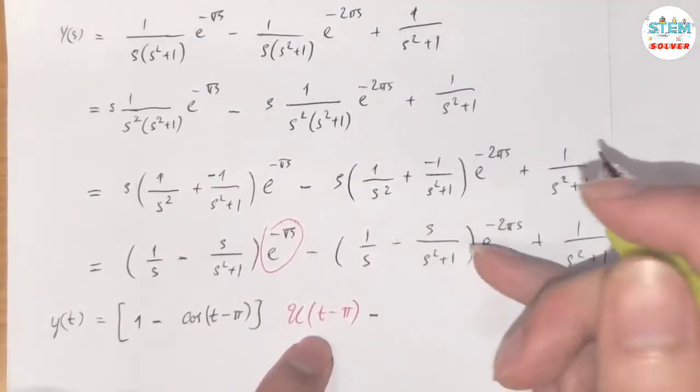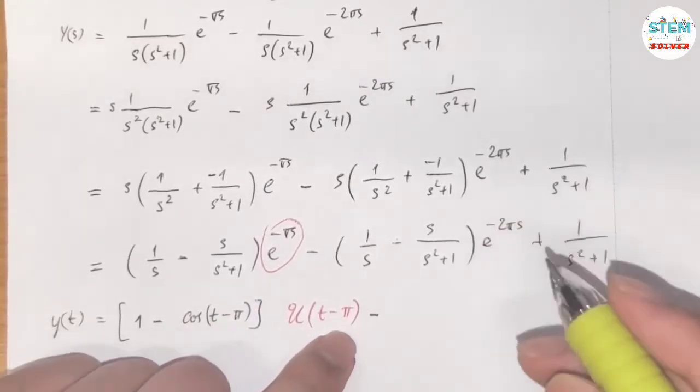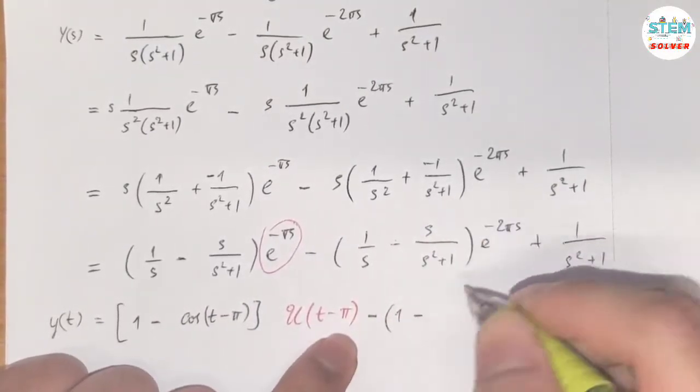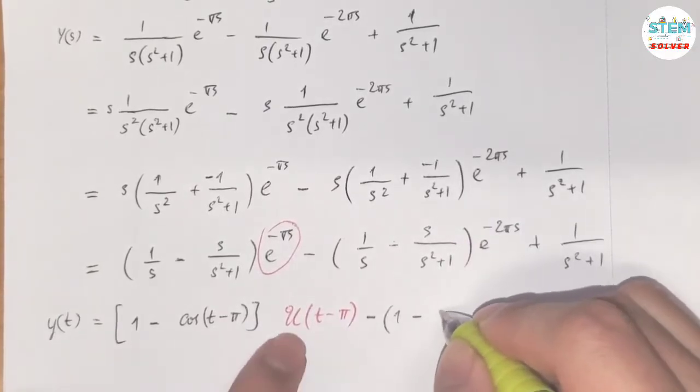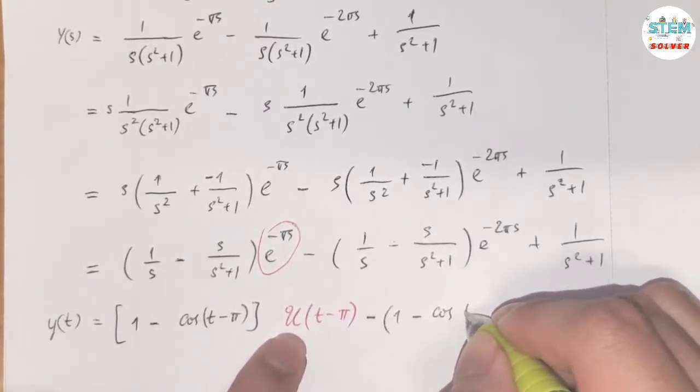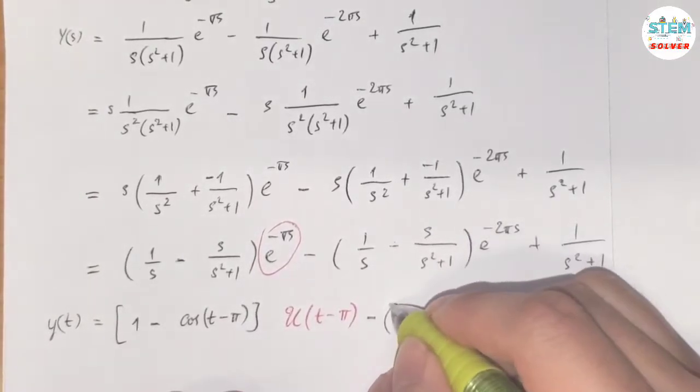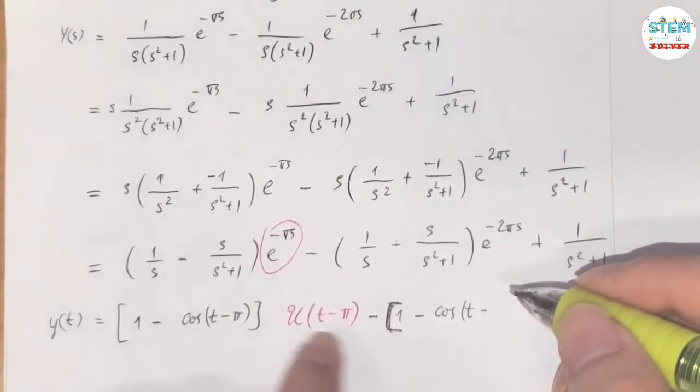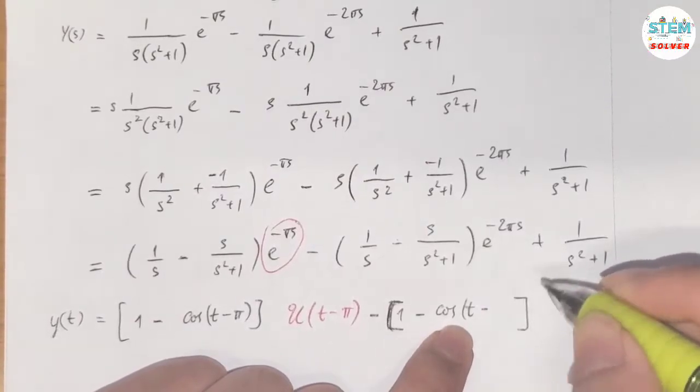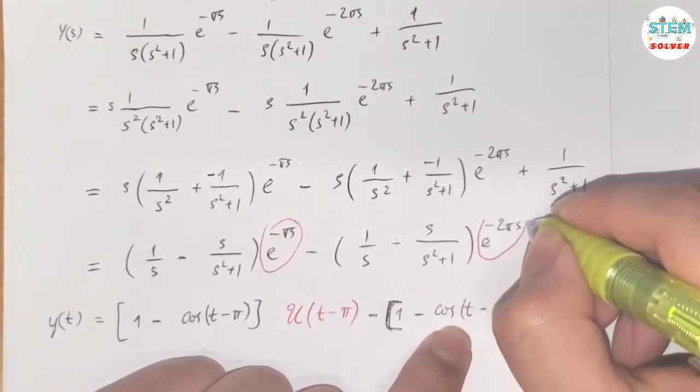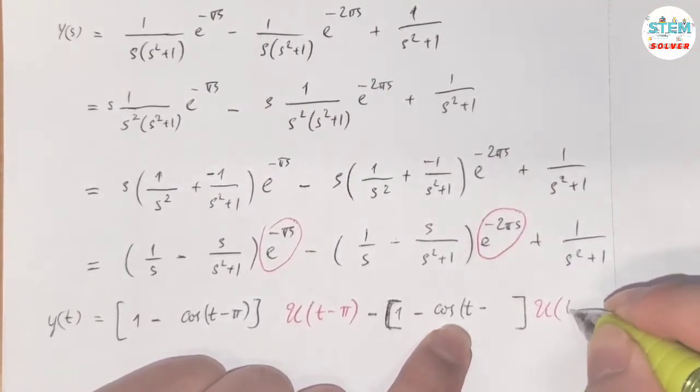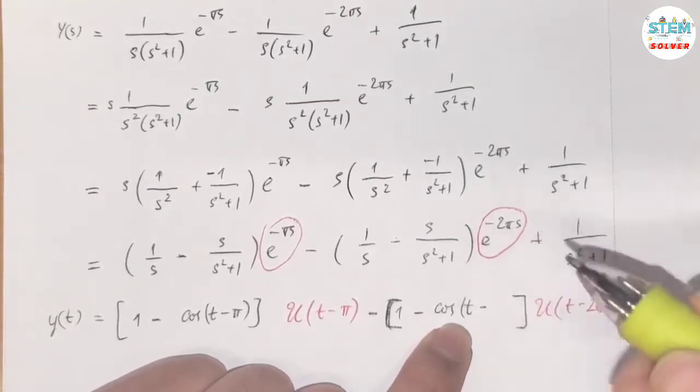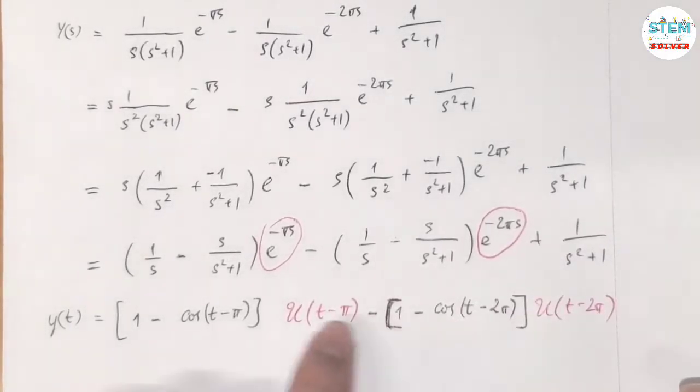Done with the first term. The second term is similar like this one. 1/s is 1, minus, so this is still cosine of t. Let me break it here. But in this case, it's not t - π. Why? Because we have e^(-2πs), so that gives me u(t - 2π), which means that we have t - 2π instead inside the cosine.